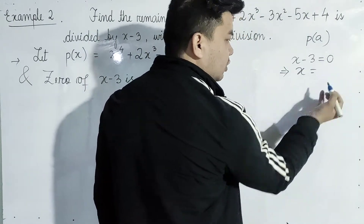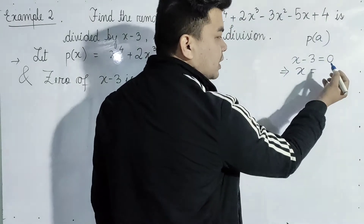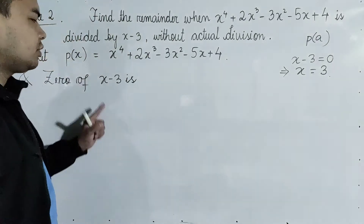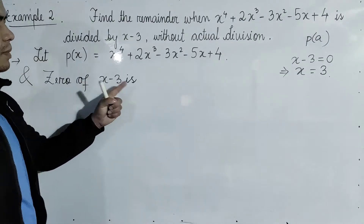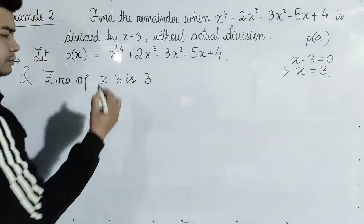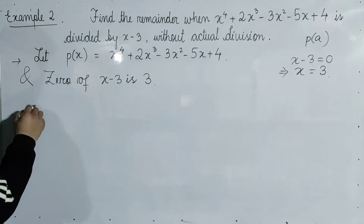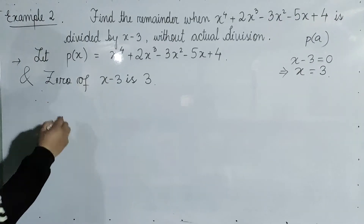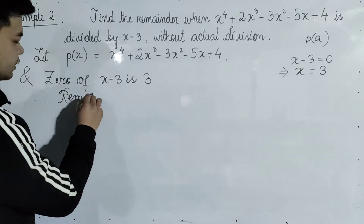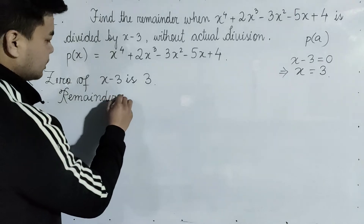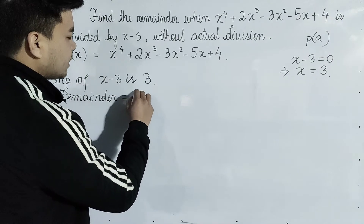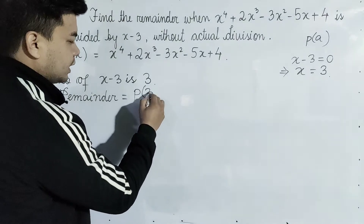Here x minus 3, so x equals 3, meaning a equals 3. The zero of x minus 3 gives x equals 3. Therefore the remainder is equal to P of a, which is P of 3.